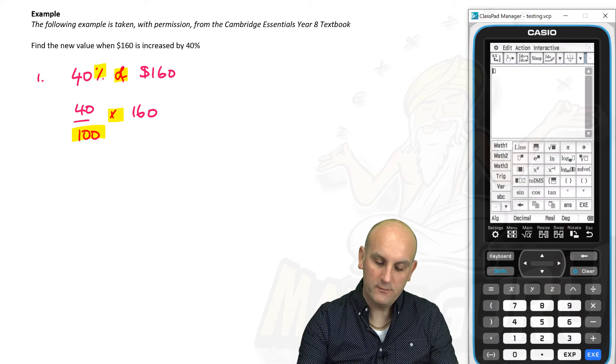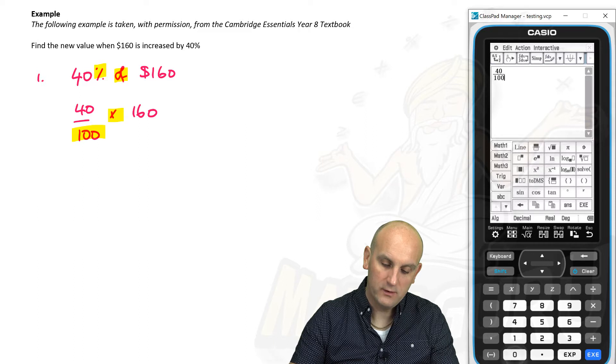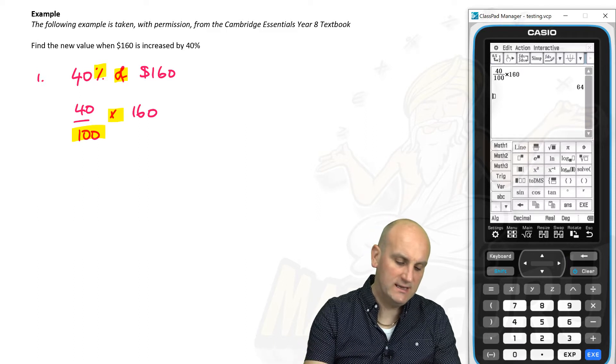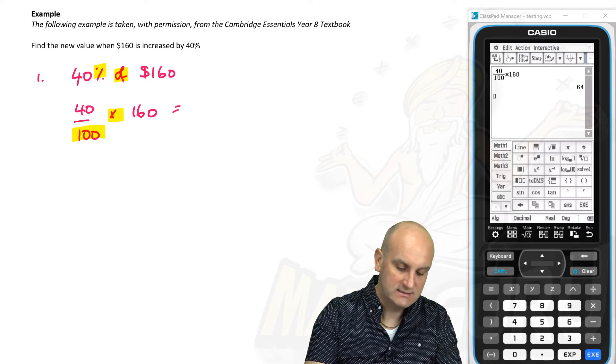Firing up my Casio calculator. I'm going to get it to do all the hard work for me. So there we go. 40 divided by 100. And I'm then going to multiply that by $160, which gives me $64. So that is $64.